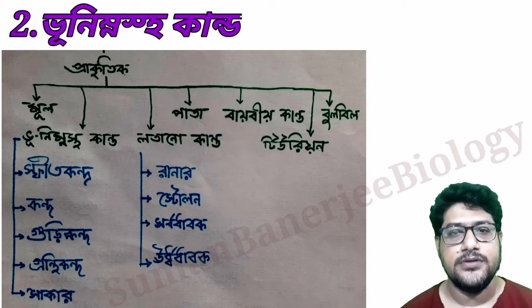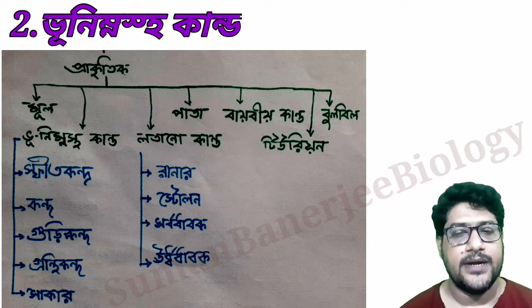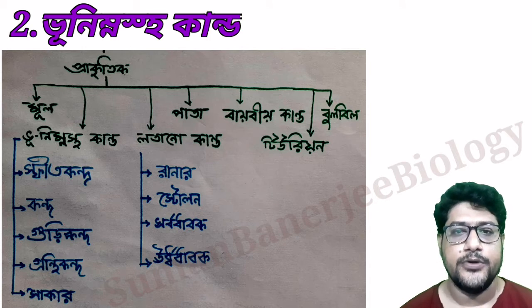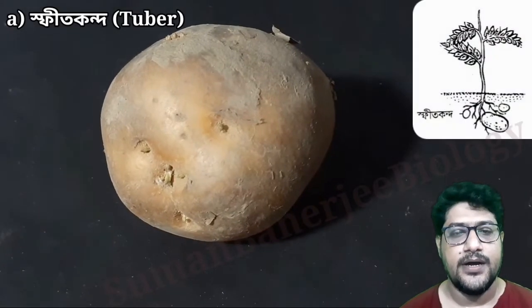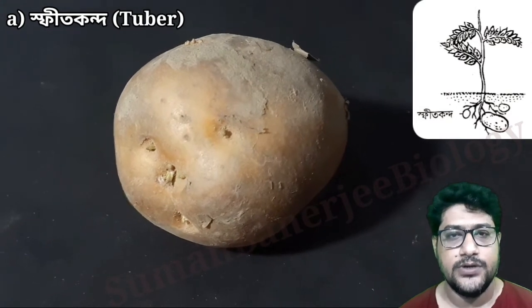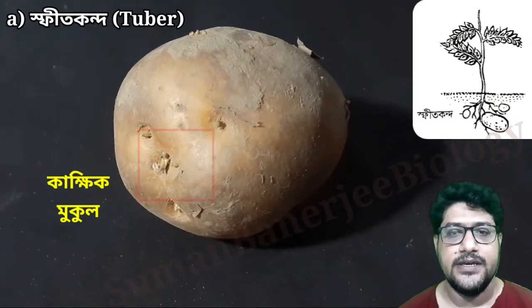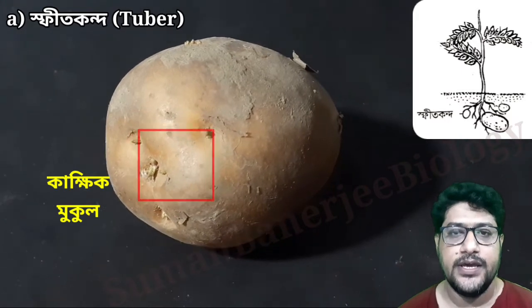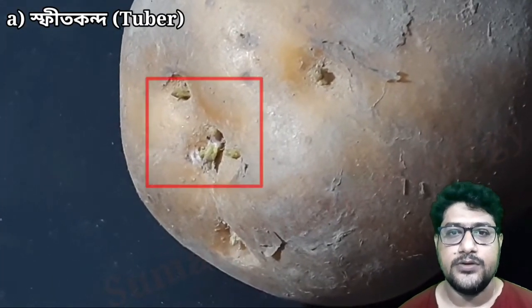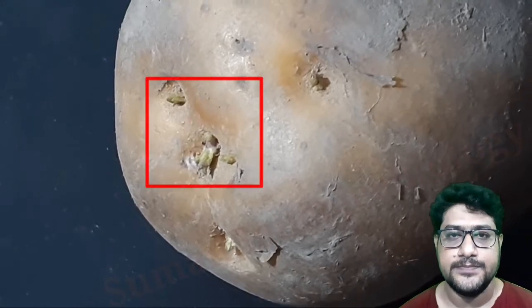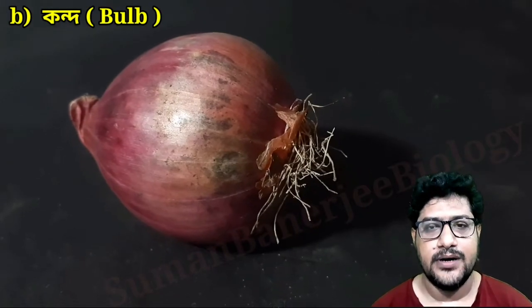ভূনিম্নস্থ কাণ্ড — অনেক উদ্ভিদের কাণ্ড মাটির তলায় অবস্থান করে এবং সেই কাণ্ড থেকে নতুন উদ্ভিদ উৎপন্ন হয়। এদের কাণ্ডকে বিভিন্ন ভাগে ভাগ করা যায়।